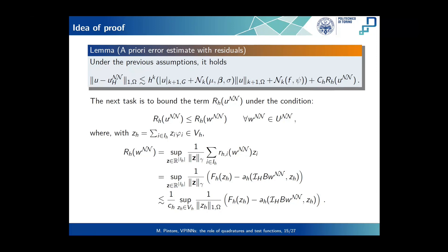In general, for more complex problems with non-convex objectives, you have no way to control the optimization error of a neural network. However, here you also have the interpolation, and if you construct the spaces properly, the minimum is zero because you have a non-singular square matrix, so you can control how far you are from it.